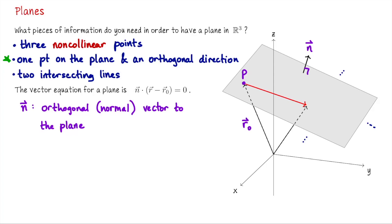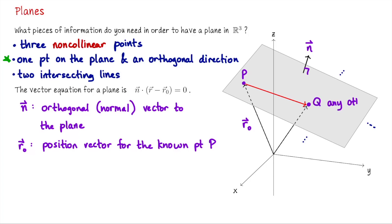For our known point P, let's denote by r₀ the position vector for this point. Now on my plane diagram, let me label by Q any other point on the plane. So we know P is on the plane, but we would like a formula that describes every other possible point on the plane. Denote its position vector r. This is similar to lines where r₀ was the position vector for a known point on the line, and r was the formula for any other point. Analogously here, r₀ is a position vector we know, and r is our unknown.